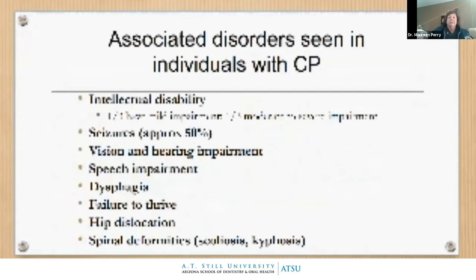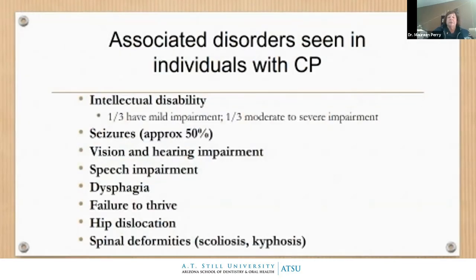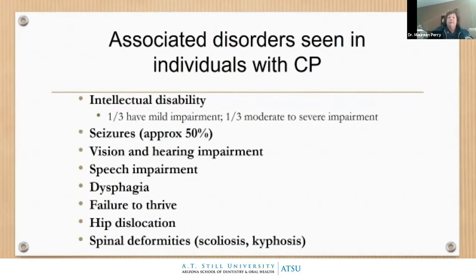Associated disorders we also see include intellectual disability — about one-third of kids with both intellectual disability and CP will have mild impairment, and about one-third may be moderate to severe. About half of kids with CP will have seizures. We see lots of vision and hearing impairments, speech impairments, dysphagia, failure to thrive, hip dislocation, and spinal deformities in this population.